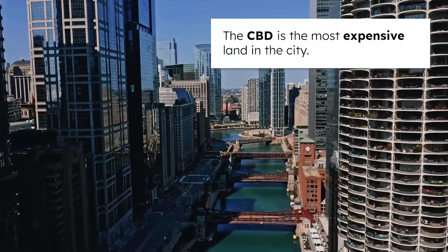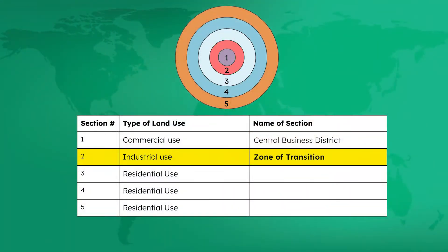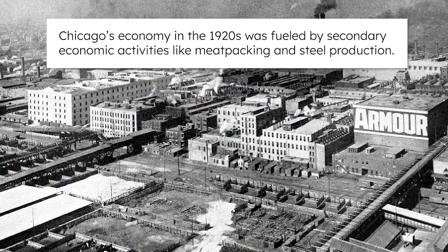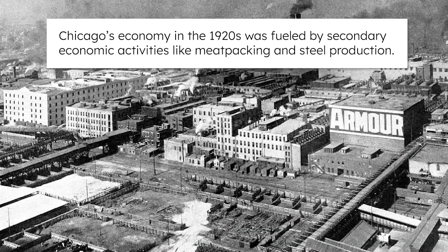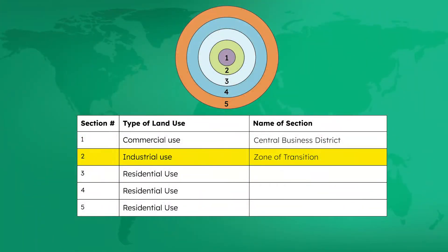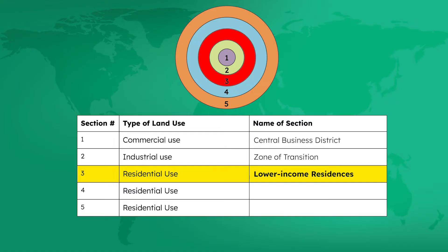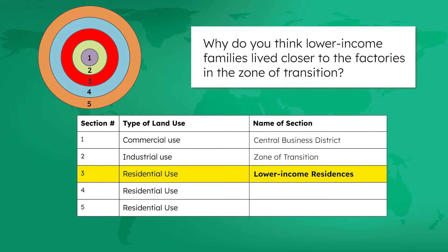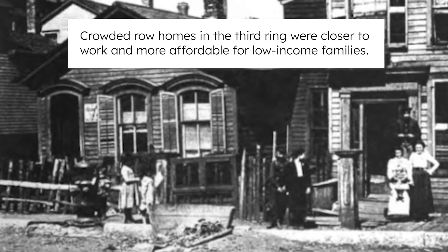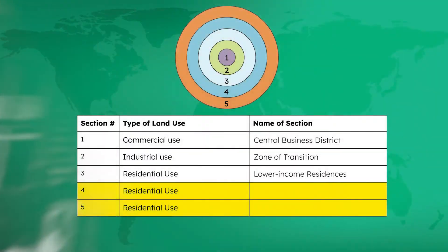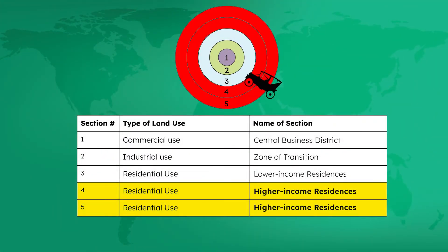Chicago's CBD was the center of commercial activity at that time and is the most expensive land in the city, which is why The Loop is dominated by skyscrapers — it's cheaper to build upward than to buy more land and build outward. The second ring, or zone of transition, is mostly industrial land use. Chicago's economy in the 1920s was fueled by secondary economic activities like meatpacking and steel production, so this whole ring is dedicated to manufacturing. The next three rings are all residential use, separated by socioeconomic class. The third ring was mostly occupied by lower-income families who worked the factory jobs, while people in the fourth and fifth rings had the time and money to commute into the CBD, where they mostly worked in Chicago's tertiary and quaternary sectors.